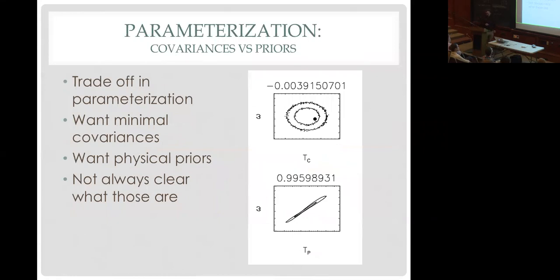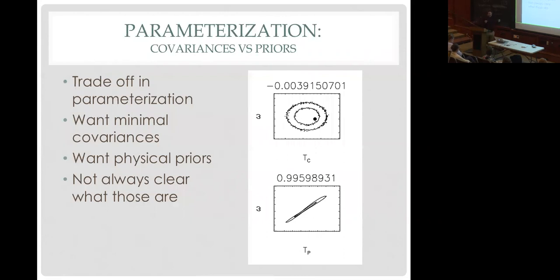There's also a competing effect: you want a parameterization that is not very covariant, because highly covariant parameter spaces are very hard to sample with a normal MCMC algorithm. If you imagine throwing darts at both plots, you're much more likely to land in the one-sigma confidence interval in the less covariant parameterization. The MCMC is just randomly throwing dots and will reject any step outside of that one-sigma confidence interval, so you'll reject a ton of steps in the highly covariant case — whereas the other is a much more efficient way to sample. There's a competing effect where you want a parameterization that's not covariant but also imposes uniform priors, and it's not always clear what those are.